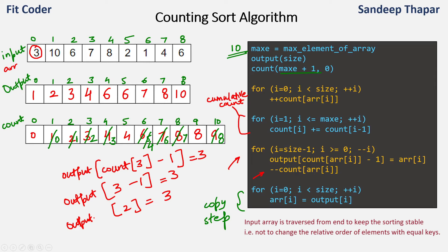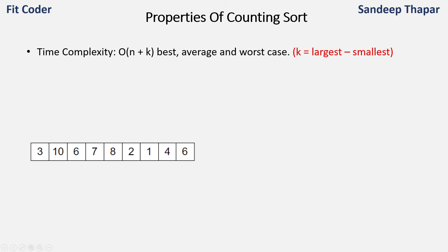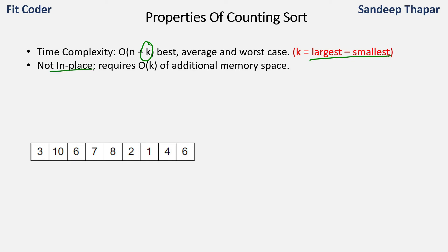Now let's look at the important properties of counting sort. The time complexity is O(n + k), where k is the range of elements — largest element minus smallest element. When we know the range and it is not very large compared to the number of elements, counting sort works very effectively. It is not an in-place algorithm because it uses O(k) additional space, so if k is not very large, it makes sense to use counting sort.